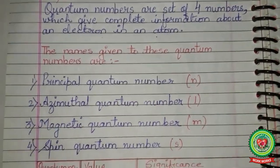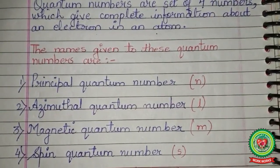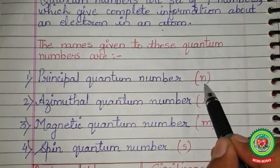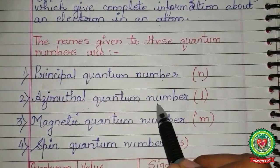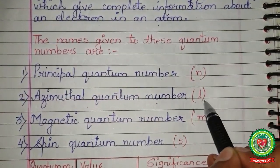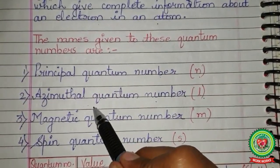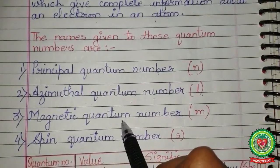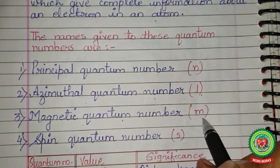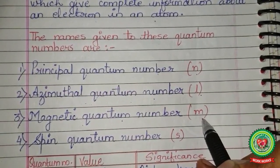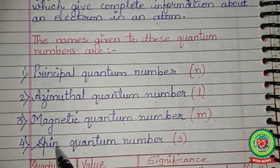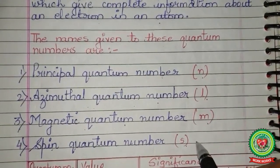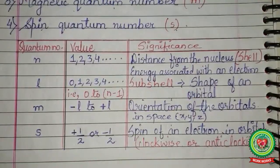The four quantum numbers are: the principal quantum number, denoted by n; the azimuthal (or subsidiary) quantum number, denoted by l; the magnetic quantum number, denoted by m or ml; and the spin quantum number, denoted by s or ms.